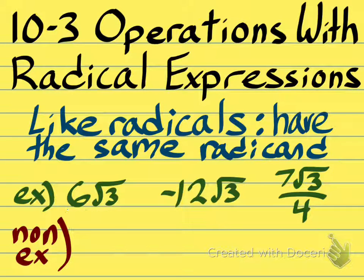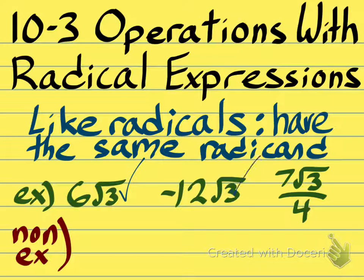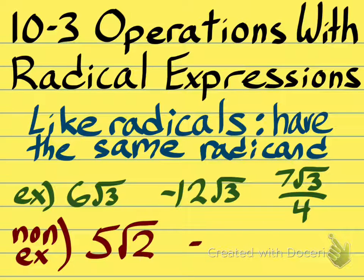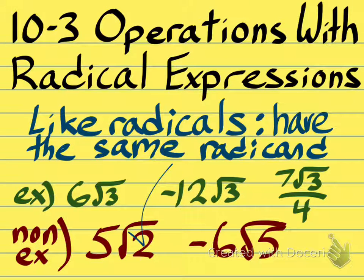They have the same radicand. The radicand is the number that is underneath the radical sign — in this example, it is 3. A basic non-example would just be two radicals that have different radicands. There is a 2 here and a 5 here, so these terms are not like radicals.